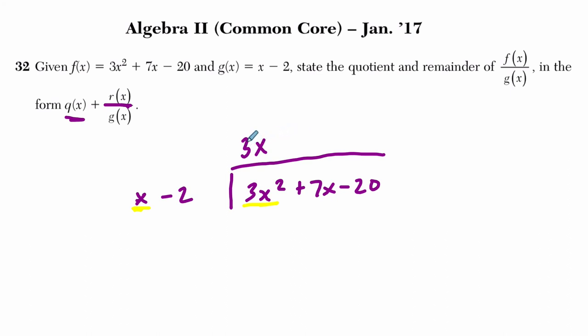That's all you have to really think about, because now you take 3x and multiply it by x minus 2, which is 3x squared. 3x times x is 3x squared. Minus 2 times 3x, so it's minus 6x.